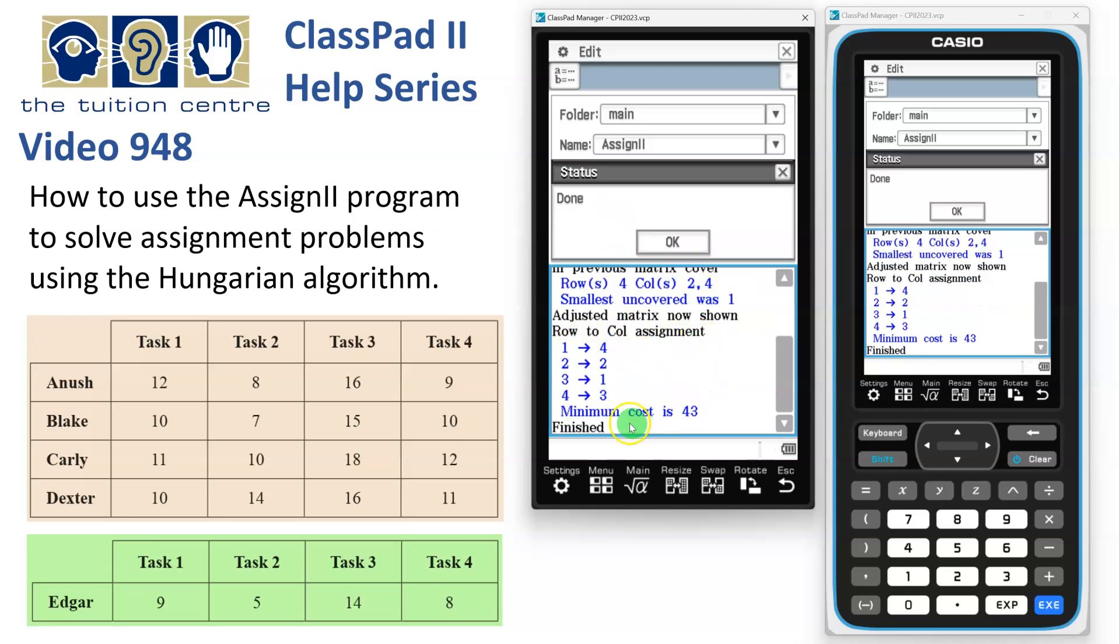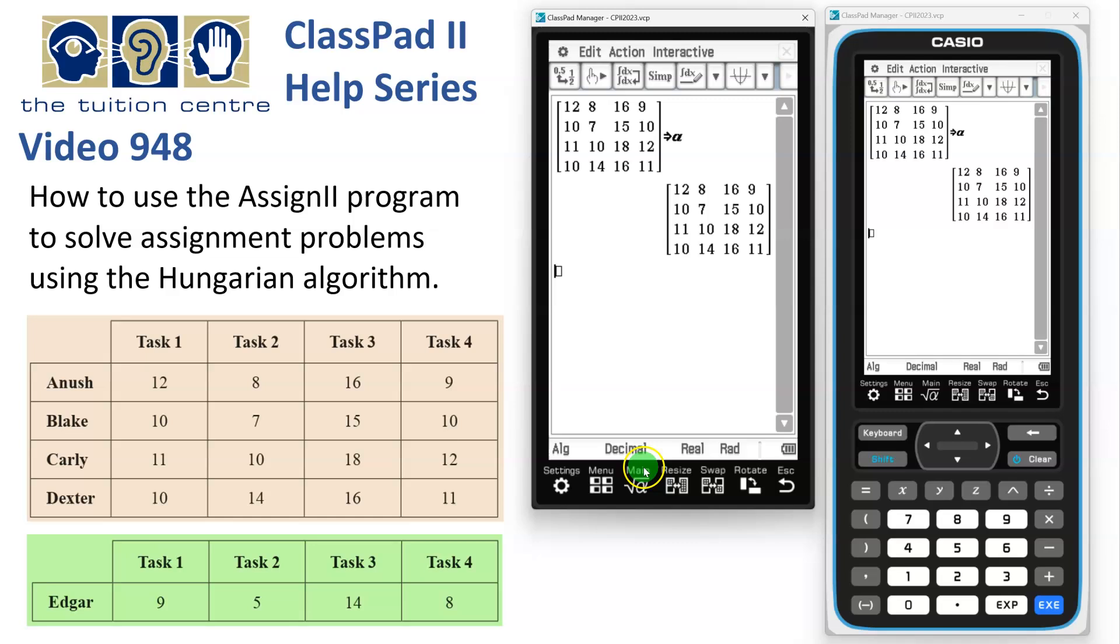And then it says here's the assignment, but what we're really interested in is just this minimum cost of 43. So we'll say OK and I'm going to head back to main.